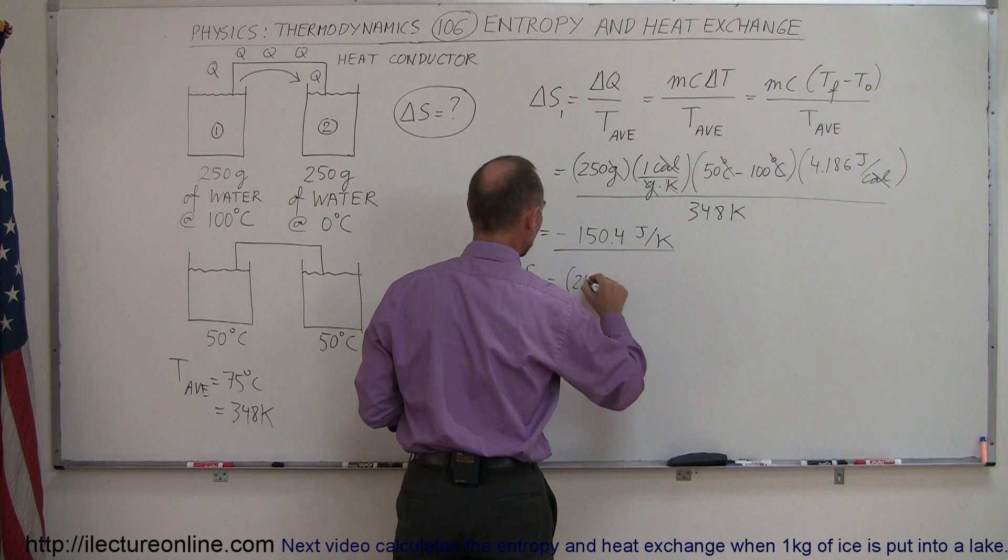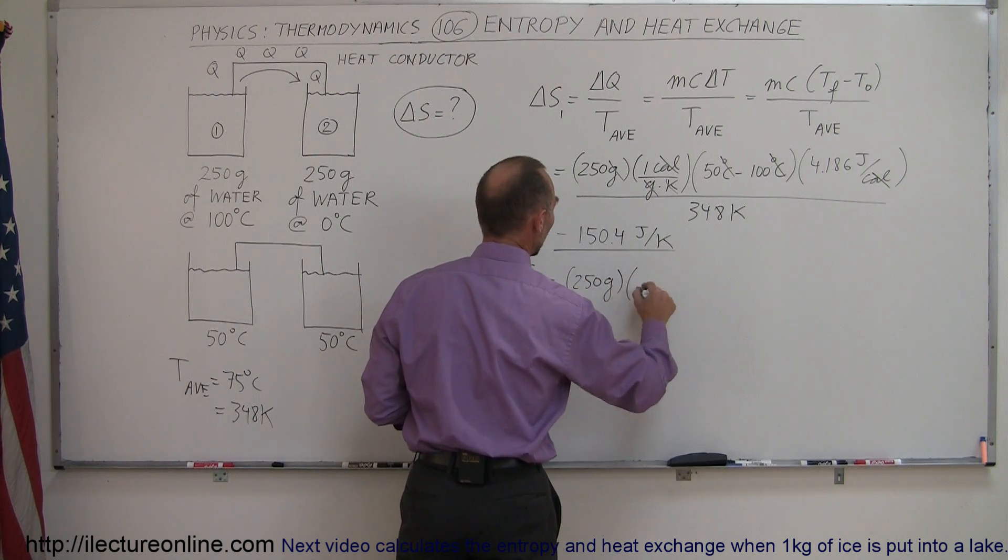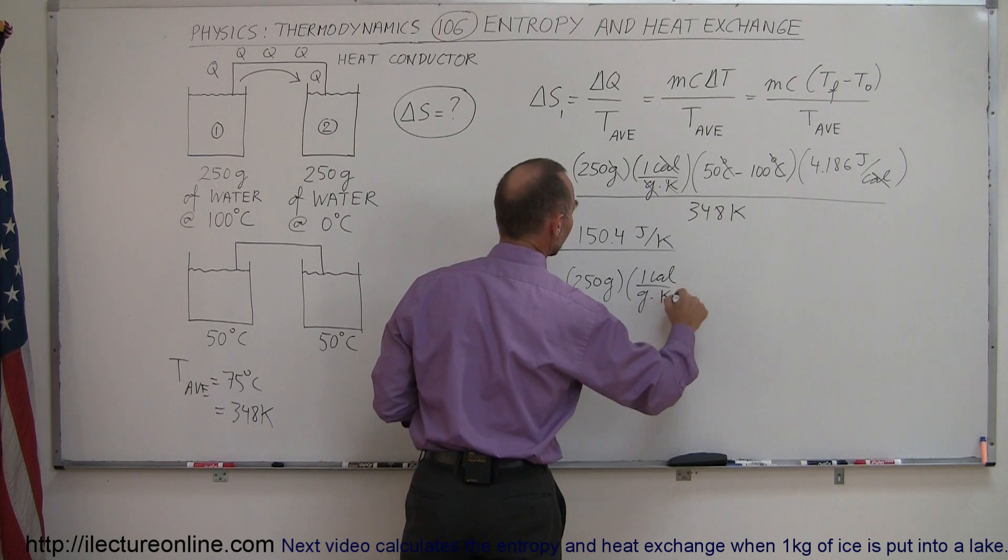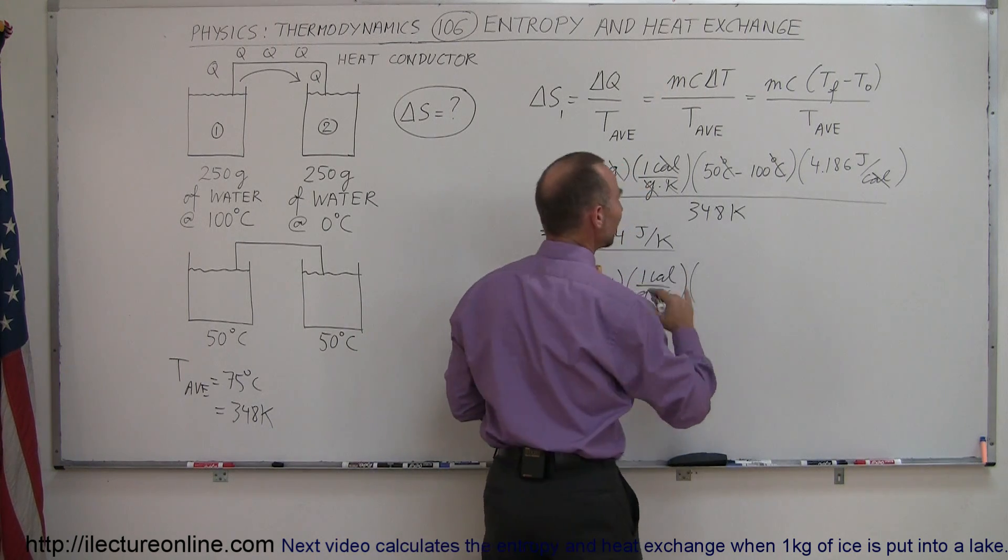And you can see that a greater positive quantity will negate the smaller negative quantity, you'll see in just a moment. Alright, so, again we have 250 grams of water in the cold cup, 1 calorie per gram per Kelvin.